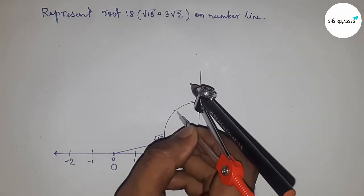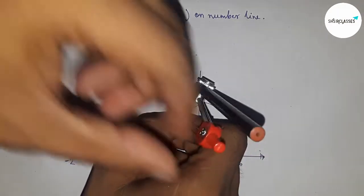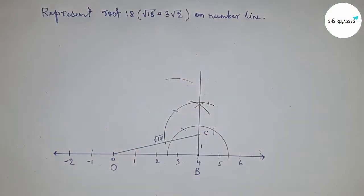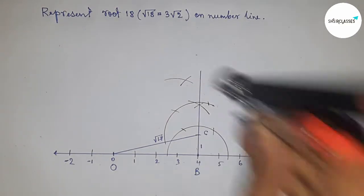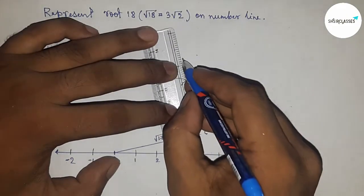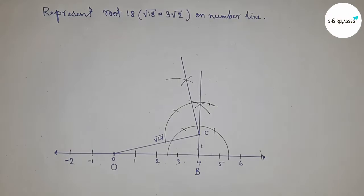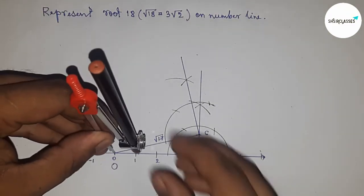So first, constructing a perpendicular line on point C and joining this. Next, taking the length between any two numbers by compass.